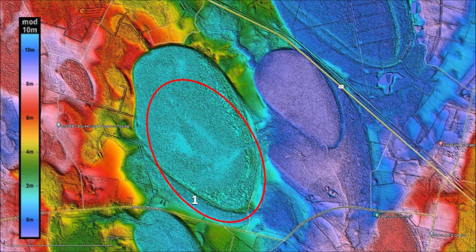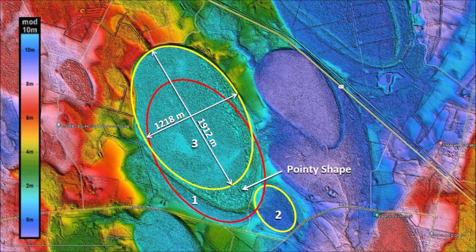First, an impact created Basin No. 1. We know this from the Law of Superposition because Basin No. 1 is overlaid by Bennetts Bay. Basin No. 2 was emplaced after Basin 1 — we can see that the rim of Basin 1 is overlaid by Basin 2. The third impact produced Bennetts Bay, overlaying Basin No. 1. The ellipse corresponding to Bennetts Bay has a width of 1,218 meters and a length of 1,912 meters, but the length does not include the pointy shape. The fourth small impact occurred after Bennetts Bay was formed and pushed some material that deformed the rim on the west side of Bennetts Bay.